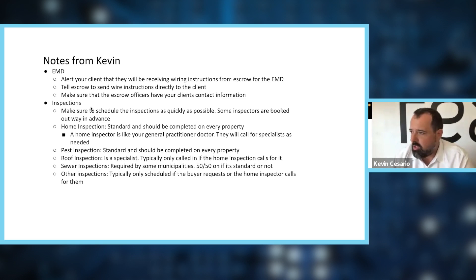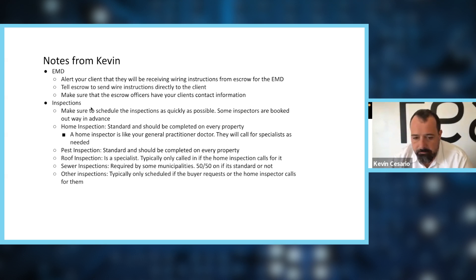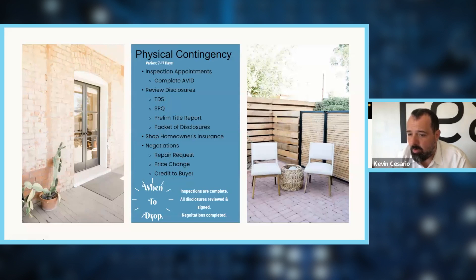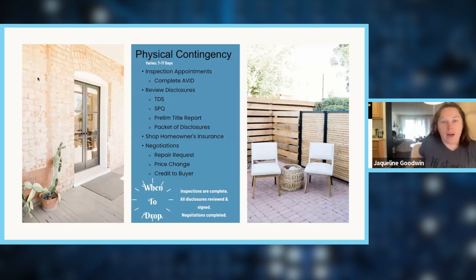A pest inspection is a specialist, but it's standard on almost every single home inspection. A roof inspection you don't necessarily hire by default — only if the home inspector calls for it. Sewer inspections are required in some cities and not in others; generally a good idea but not always standard. Don't automatically book inspections beyond home and pest unless requested by your client or the home inspector.